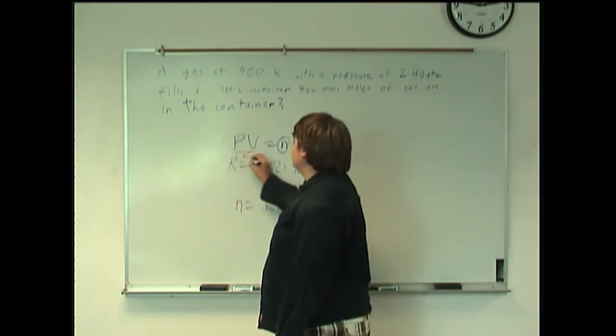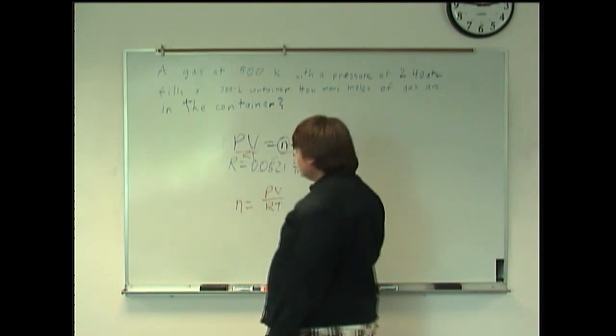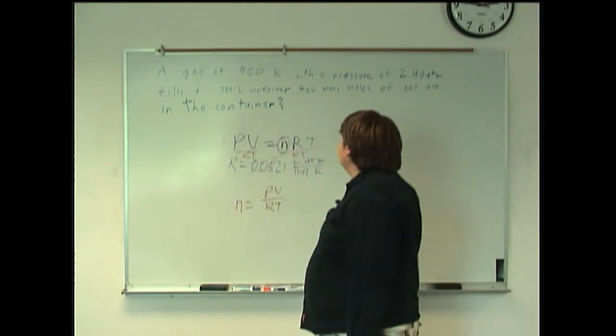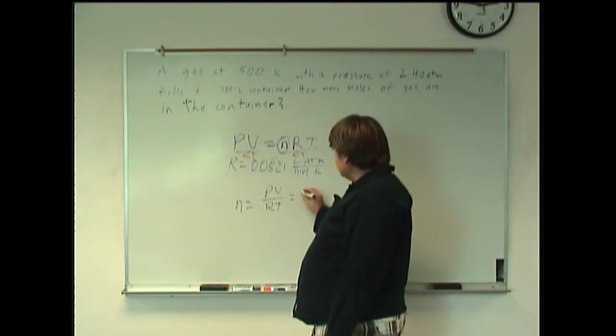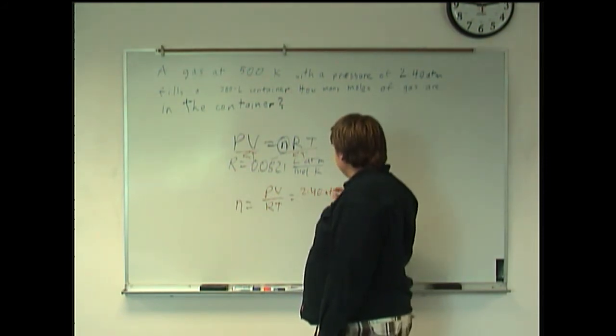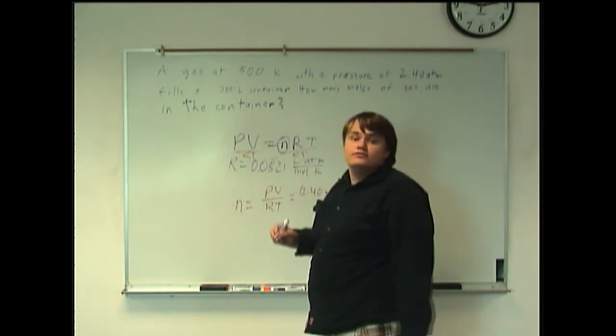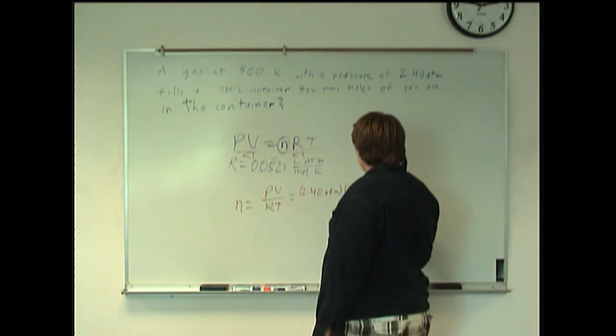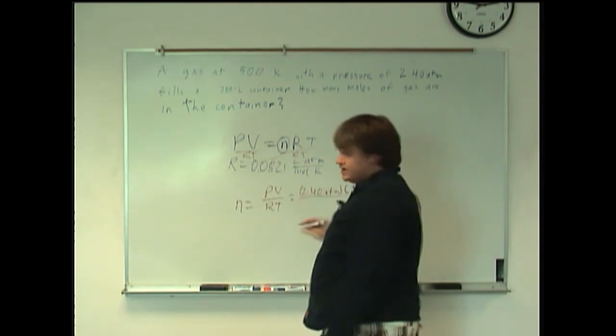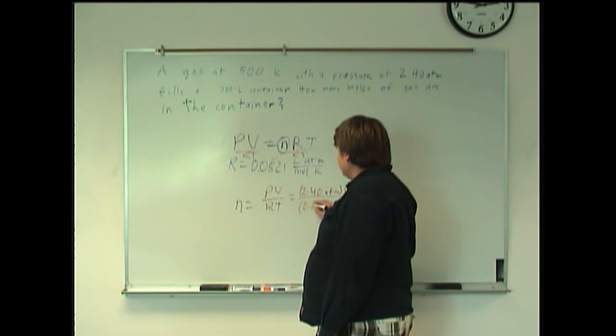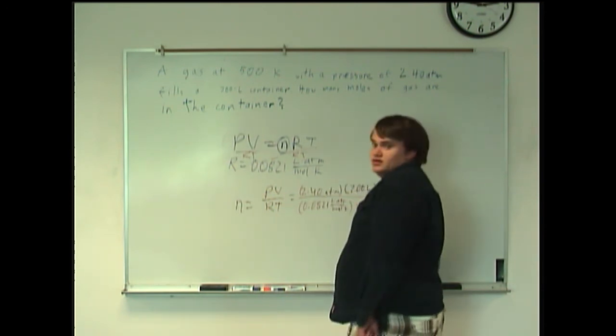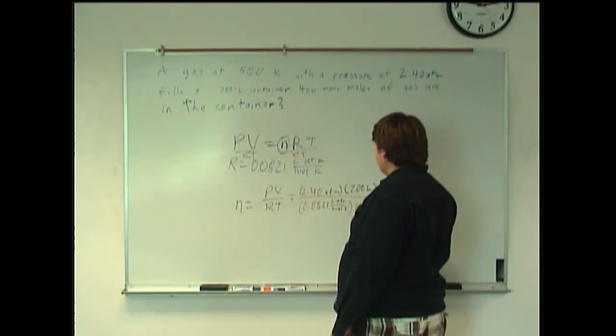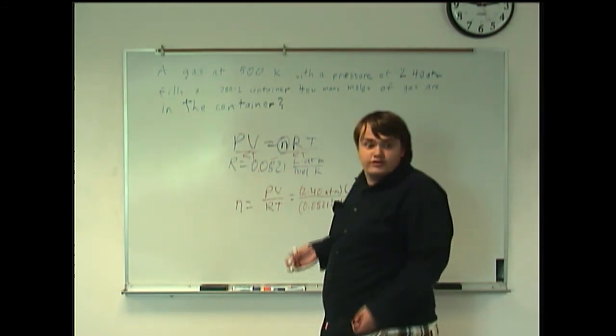Of course, getting that from dividing both sides by RT here. And of course, at this point, it's just a matter of plugging in the numbers you have with units. So, you have the pressure, which is 2.40 atmospheres, times the volume, which is 7.00 liters, and then divide all that by the gas constant, 0.0821 liter atmospheres per mole kelvin. And of course, the temperature in kelvins, which was 500 kelvins.